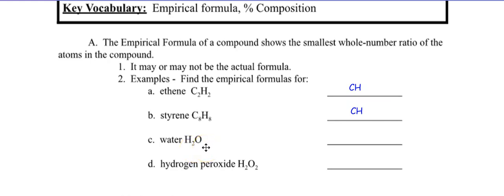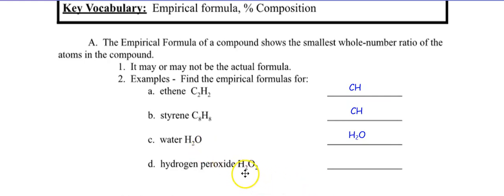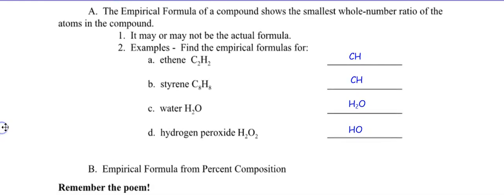What about water? The smallest whole number ratio of two and one — what can both two and one be divided by and still get a whole number? Only one. So water's empirical formula is its molecular formula — they are one and the same. What about hydrogen peroxide? The smallest whole number ratio for H₂O₂ — divide both by two — gives H₁O₁, or just HO. So HO is the empirical formula for hydrogen peroxide.